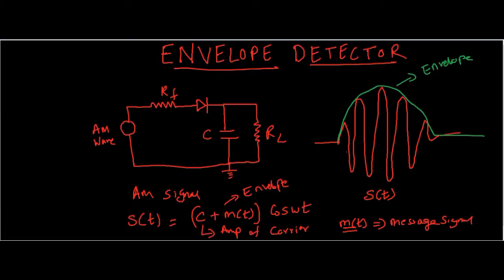Before explaining the working of envelope detector, I would like to explain some things. As you can see any AM signal can be represented by a simple equation that is S(t) is equal to c plus m(t) cos omega_c t where c is the amplitude of carrier and m(t) is a message signal, where omega_c is the frequency of the carrier.